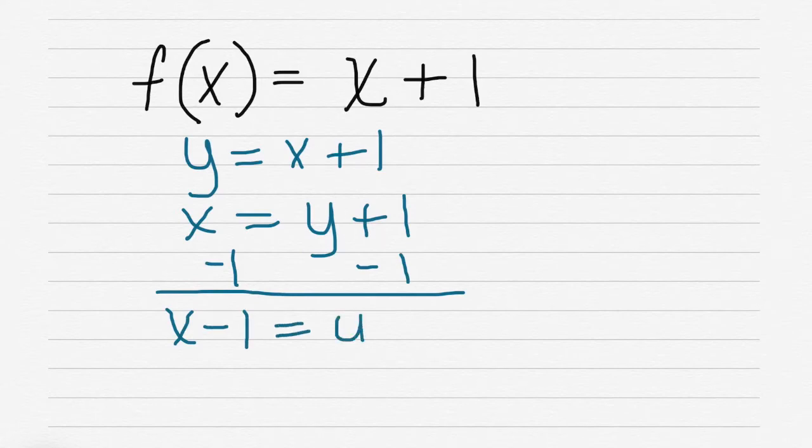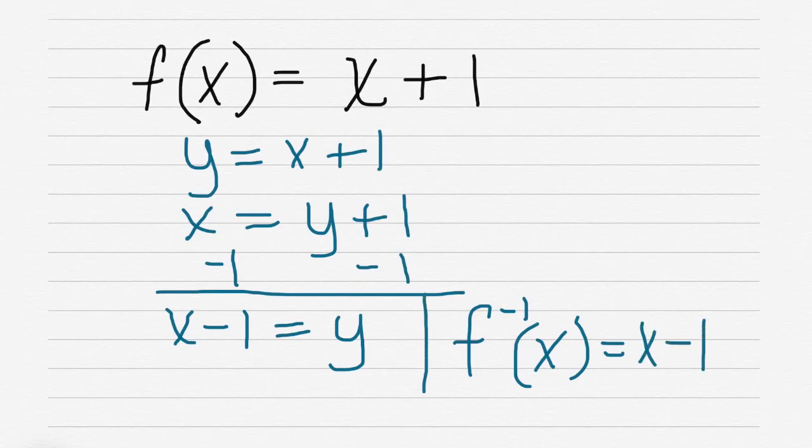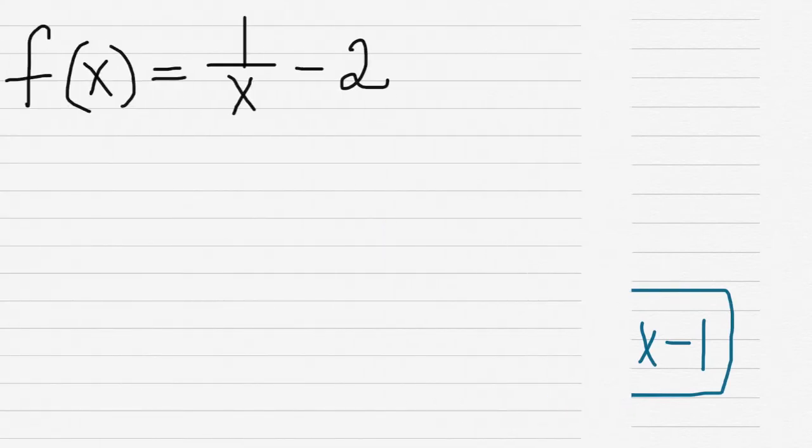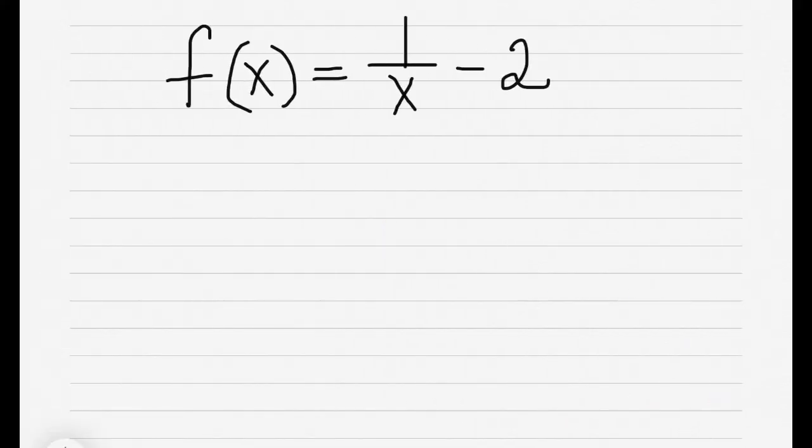And that is our inverse. In inverse notation, it would be f^(-1)(x) = x - 1. There's your answer for the inverse. So let's take a look at a little bit more challenging one.